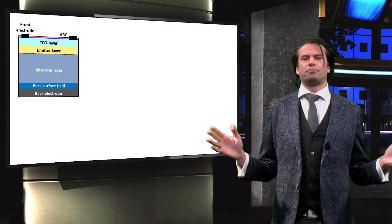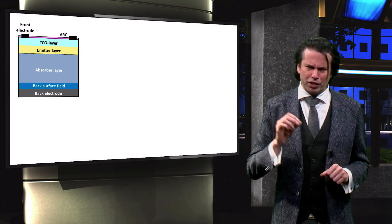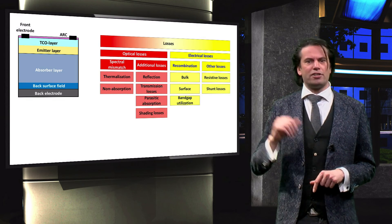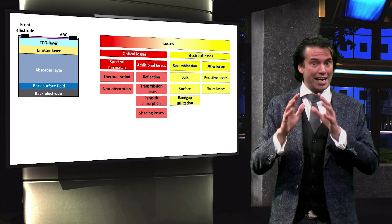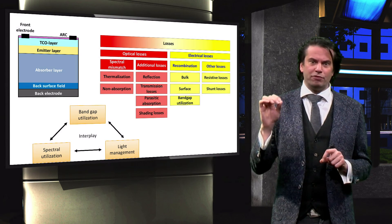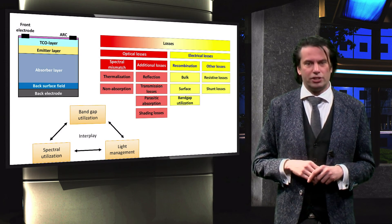In summary, we discussed the basic function of each of the layers in a standard crystalline silicon solar cell. We looked at an overview of the loss mechanisms that occur in any type of solar cell, and derived from these the solar cell design rules. You have now come to the end of the last video of the introductory week. In the rest of this course, we will dive deeply into the physical and optical principles behind these loss mechanisms, and learn methods to tackle them as a photovoltaic engineer.